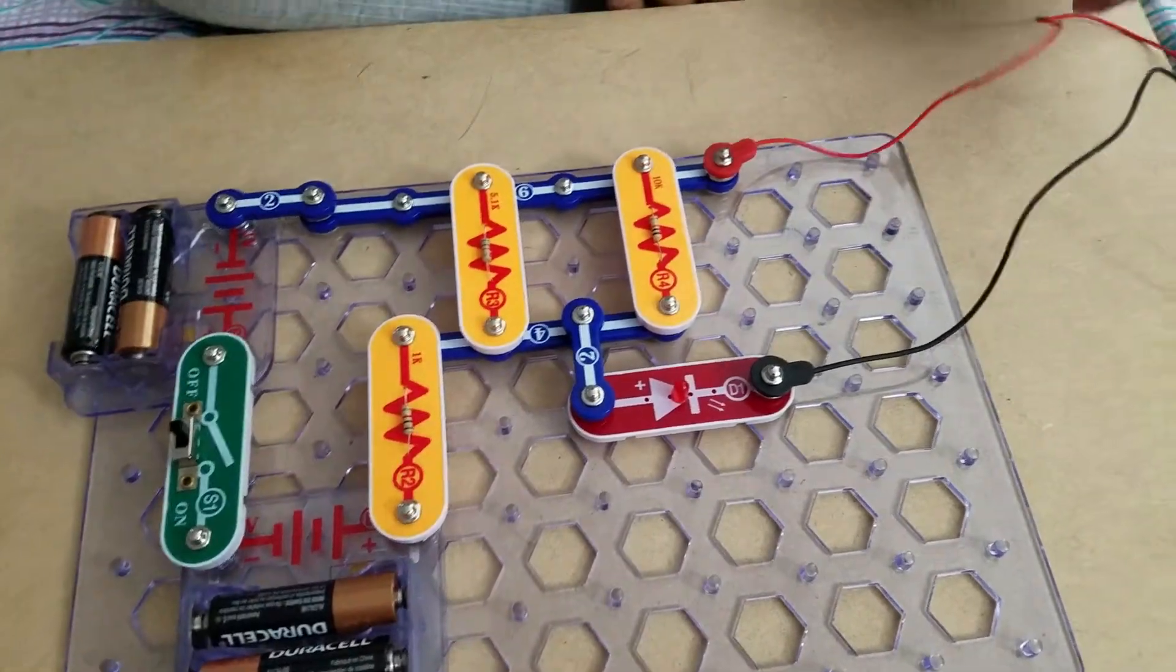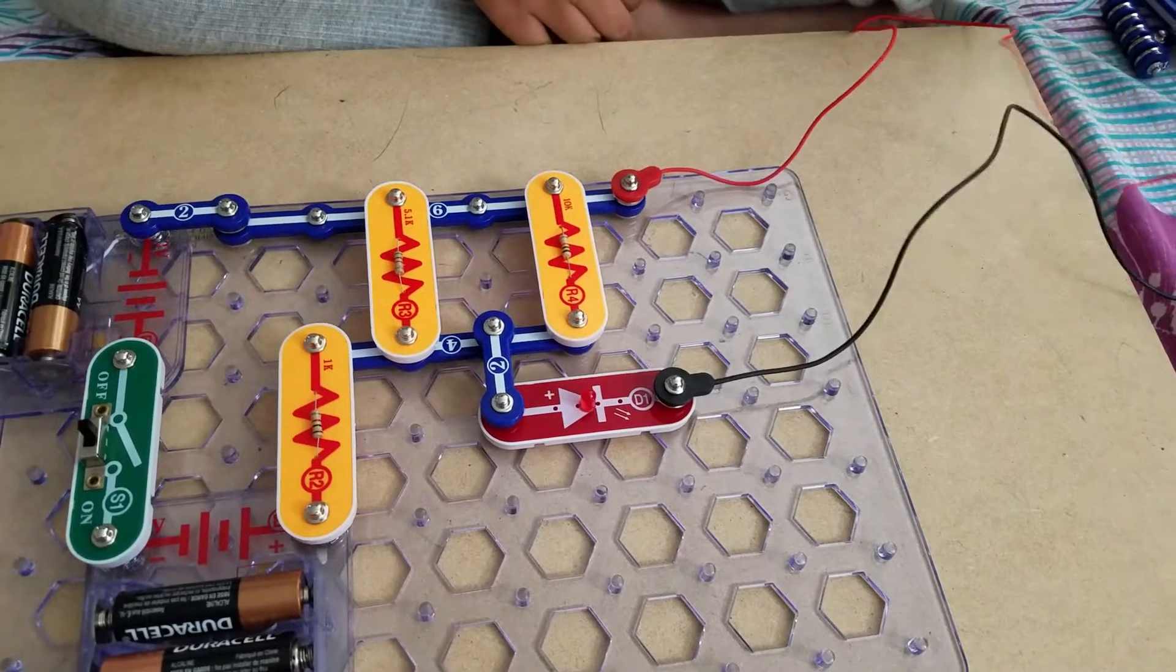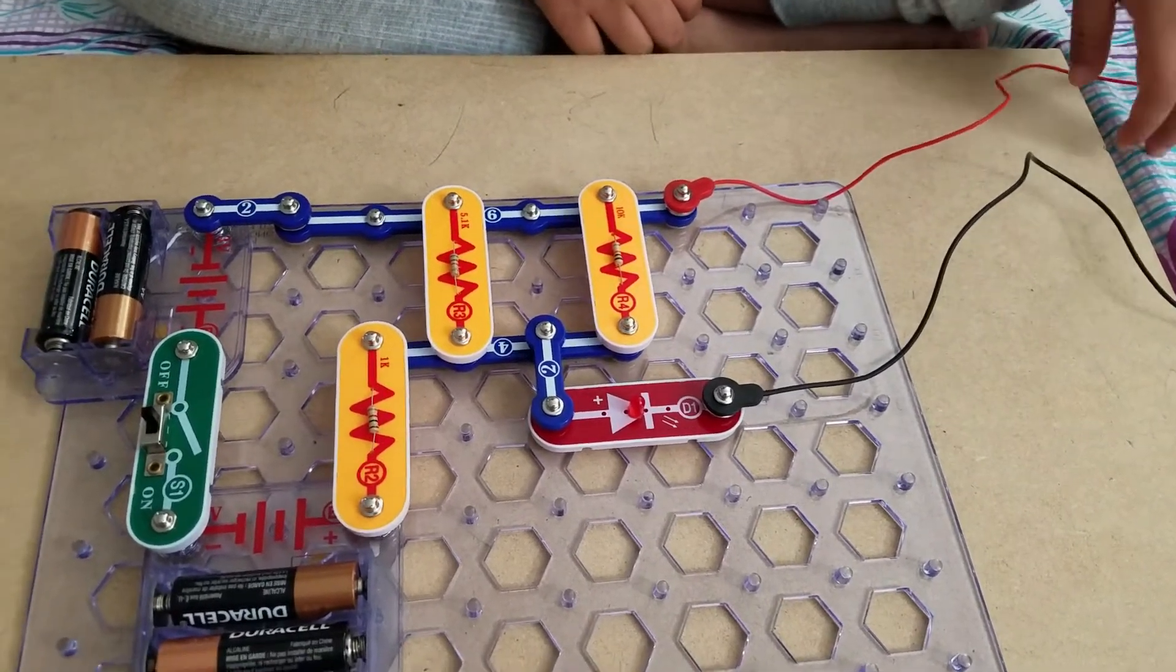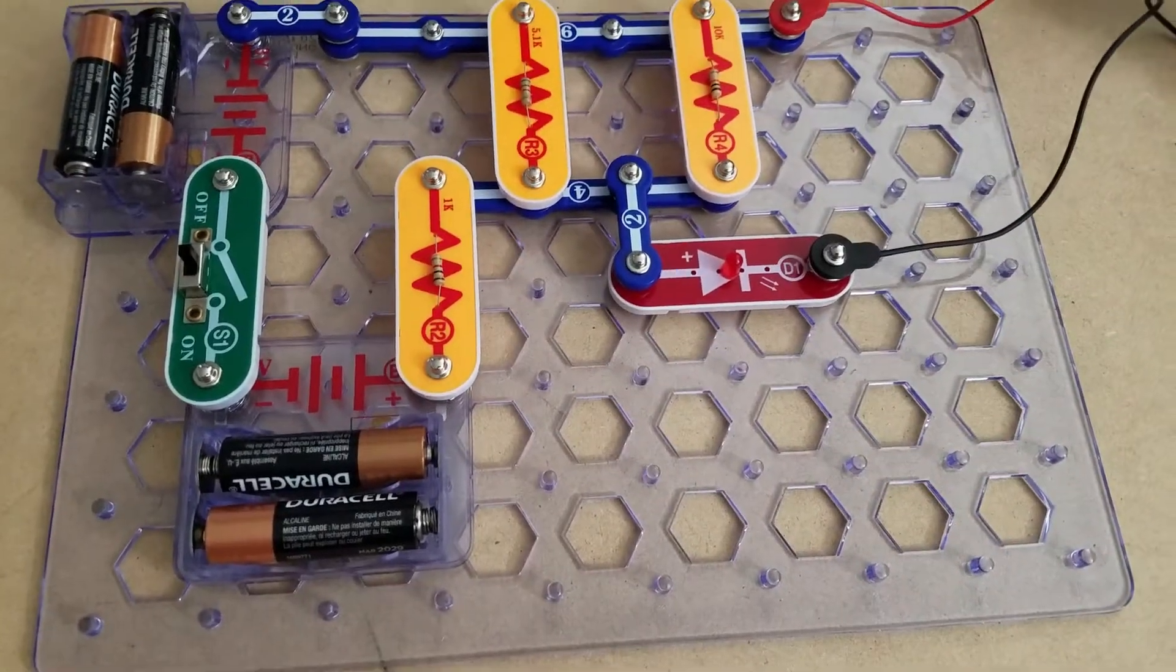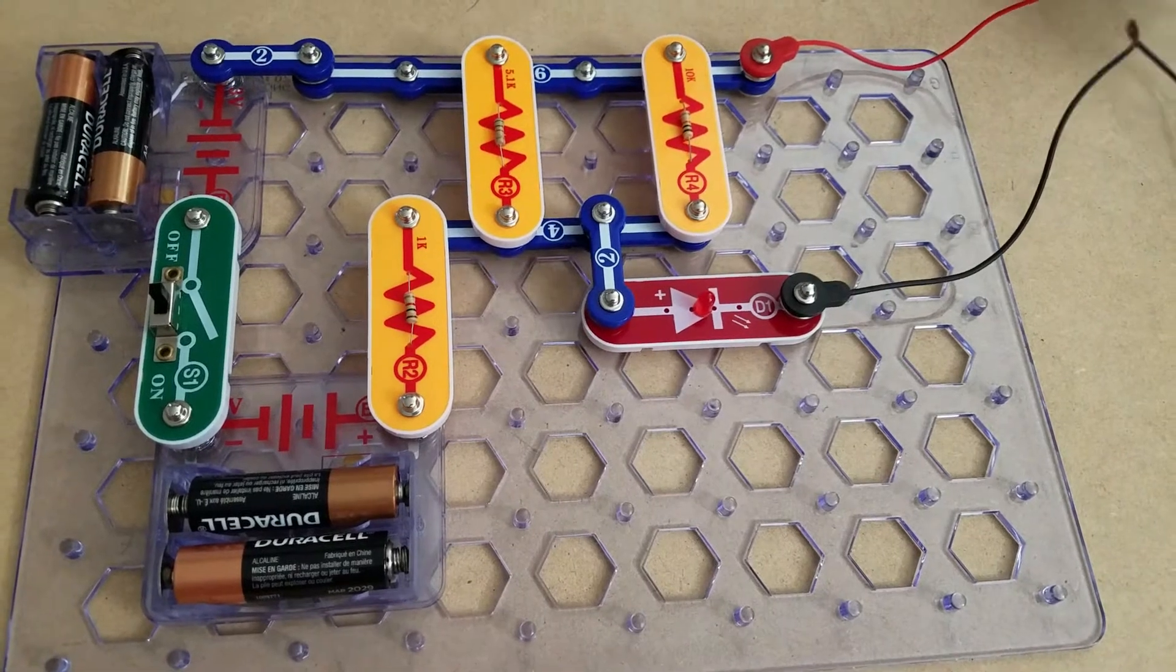What about the black and red wires? Those are diodes. You check the current with those.